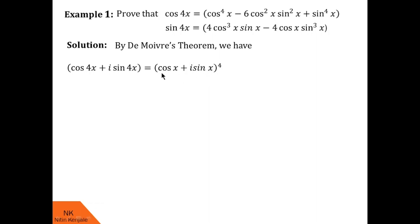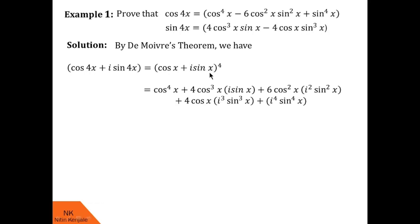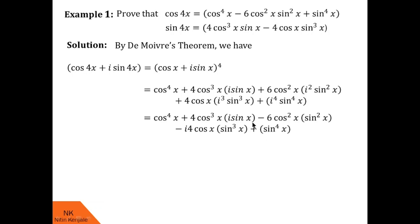Now in step 2, we expand the RHS using binomial expansion, treating it as (a + b)^4. Using binomial expansion, this gives cos⁴x + 4cos³x·(i sin x) + 6cos²x·(i² sin²x) + 4cos x·(i³ sin³x) + i⁴·sin⁴x. You can pause the video and check this expansion. Now we replace higher powers of i: i² = −1, i³ = −i, and i⁴ = 1. After replacing, we get the simplified statement.